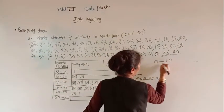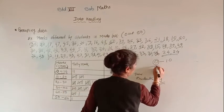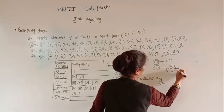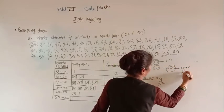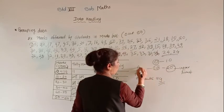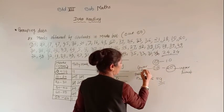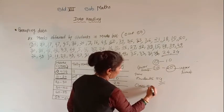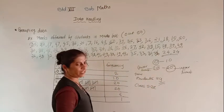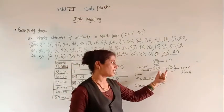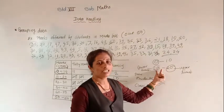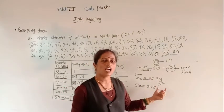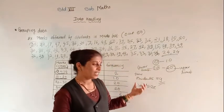In the class interval — for example 0 to 10 and 10 to 20 — the right-hand side value is called the upper limit and the left-hand side value is called the lower limit. The class size or class width is the difference between the upper limit and the lower limit. For example, 20 minus 10 equals 10, so 10 is the class size.